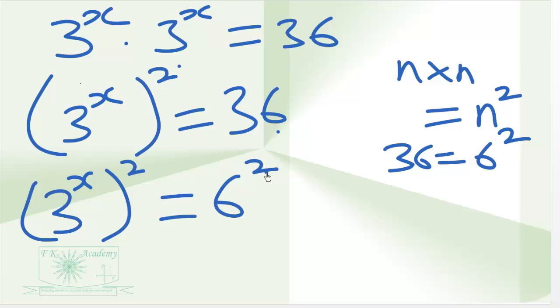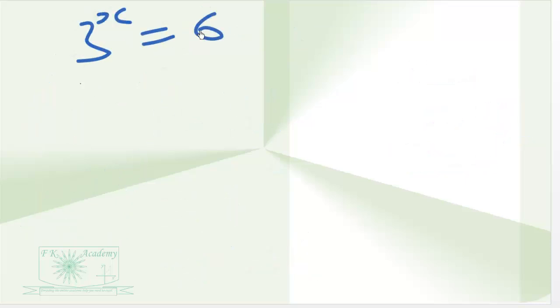The exponents are now equal. So we can equate the bases. So we have 3 exponent x is equal to 6. To solve this equation, we can take logarithm of both sides.